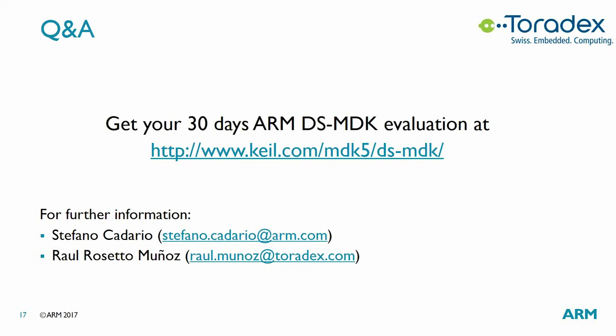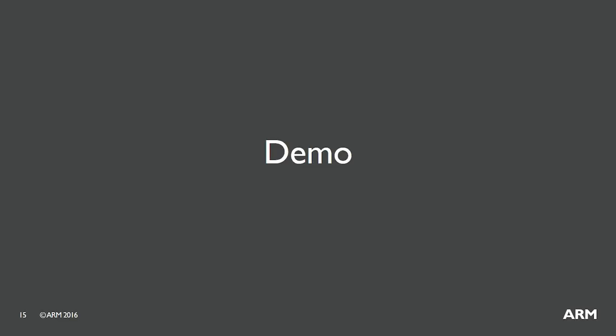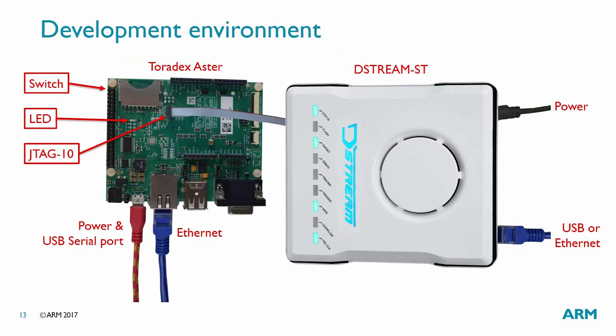Thank you, Stefano. Let's look at the questions. The first one: what tools — hardware and software — do I need to reproduce what you showed today? We have a Toradex Aster board with a Colibri iMX7 module, and a DStream SD debugger, though any compatible debugger like U-Link Pro can be used. In terms of software, we use the Linux image and plan to release the demo example as a CMSIS pack in the next couple of weeks, so you can simply import the example, select the Colibri board, and build and debug from scratch.